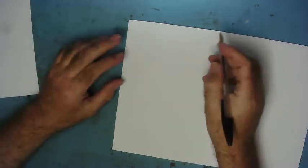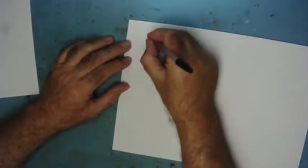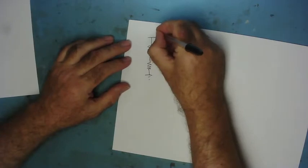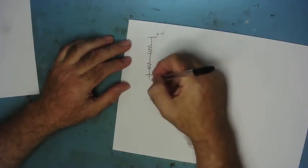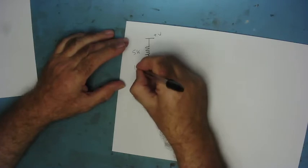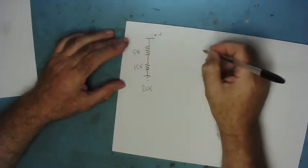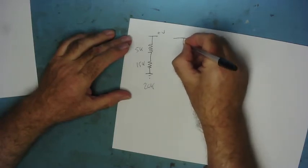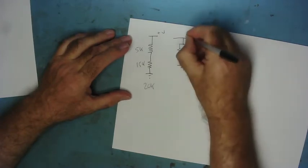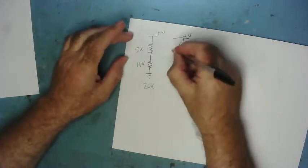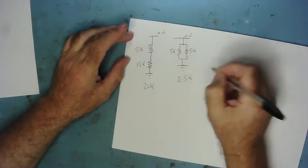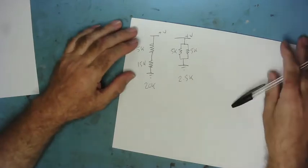Let's compare capacitors to resistors. With resistors, two resistors in series — the total resistance is the sum of the two. So if this is 5 kilohms and this is 15 kilohms, the total will be 20. Resistors wired in parallel — the resistance halves. So if this is 5 and this is 5, the sum will be 2.5, half. And the more you add, the lower it goes. Capacitors are the opposite.